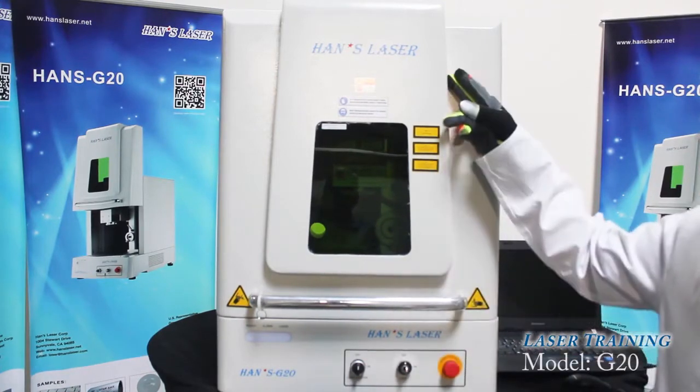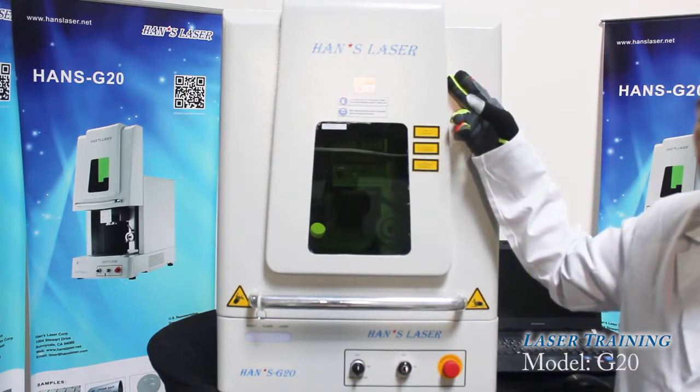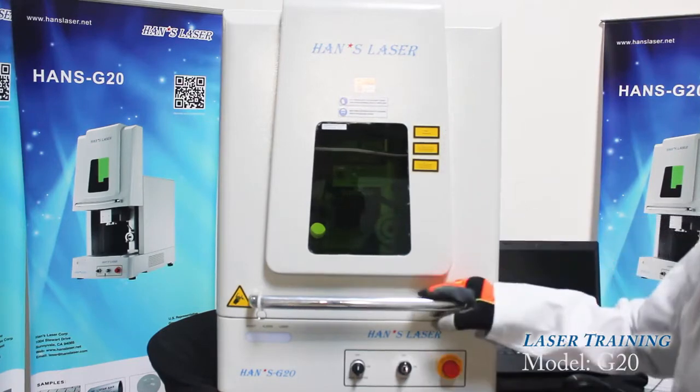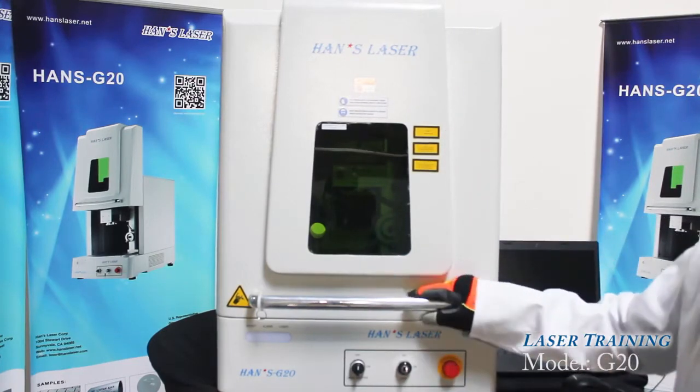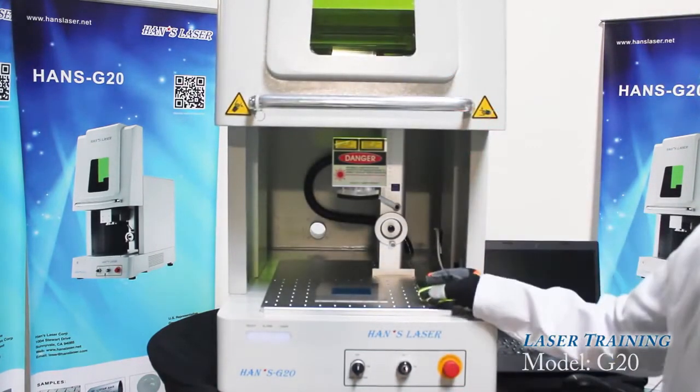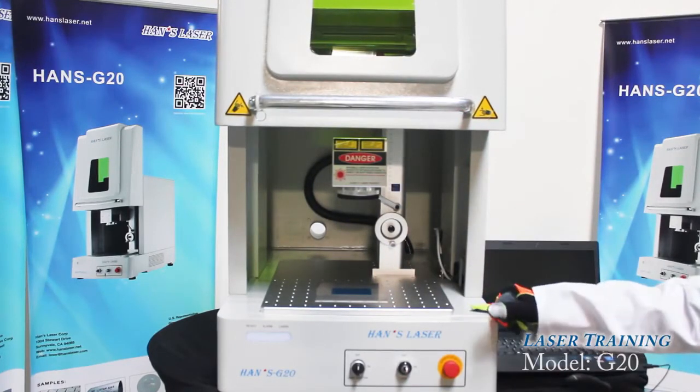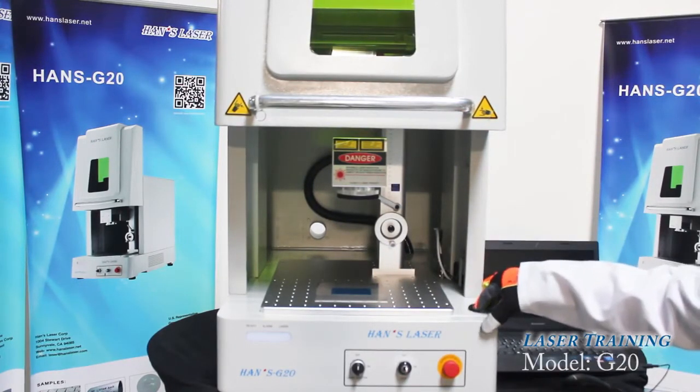Today we're going to introduce the Hans Laser G20 fiber laser marking machine. You can see this machine comes complete with the lens, software, laptop, and will be ready to run.